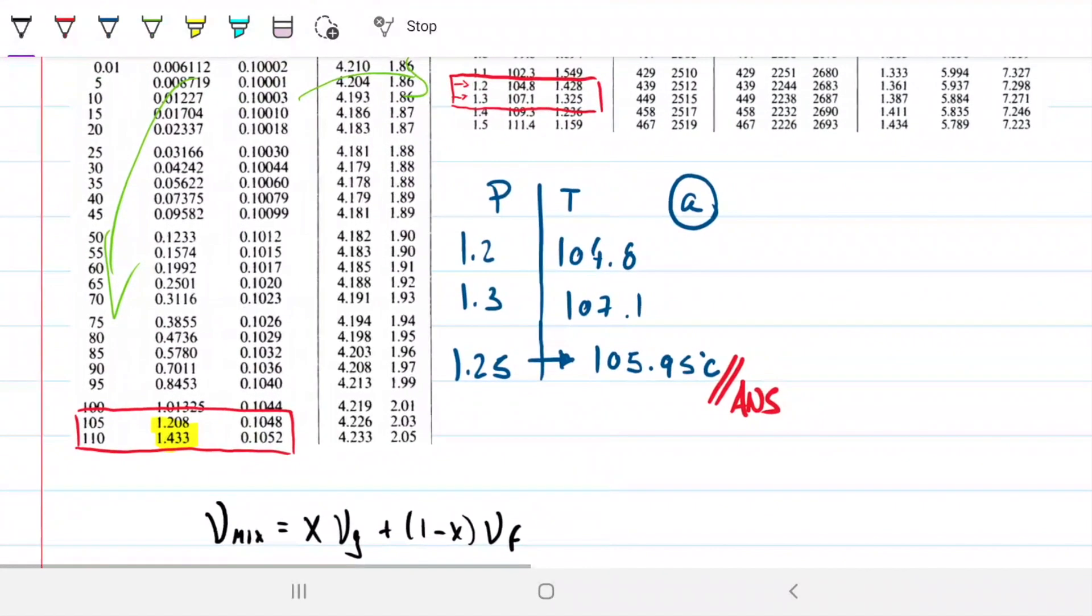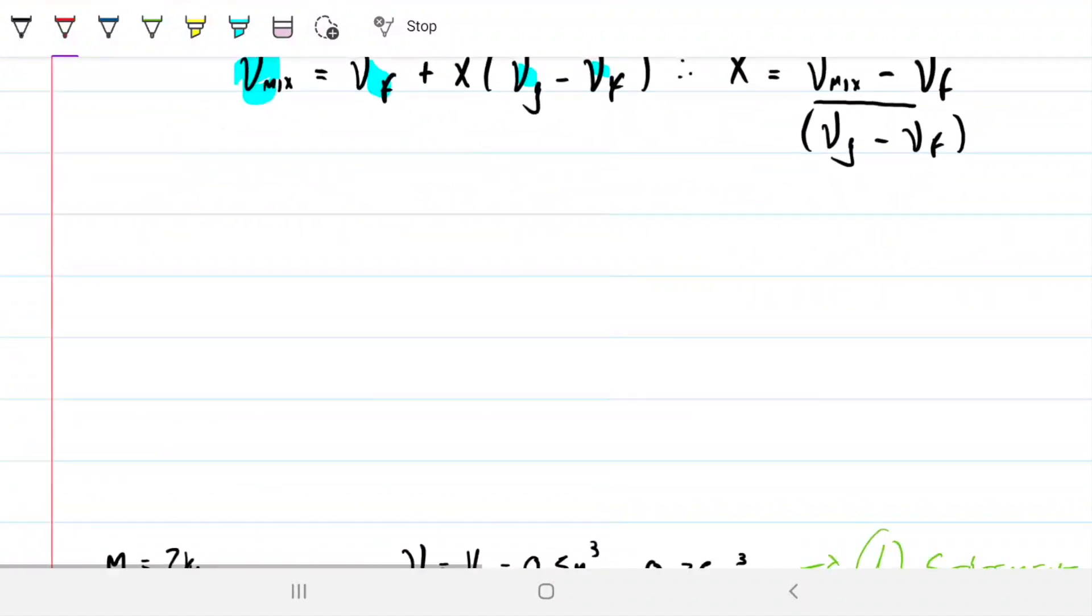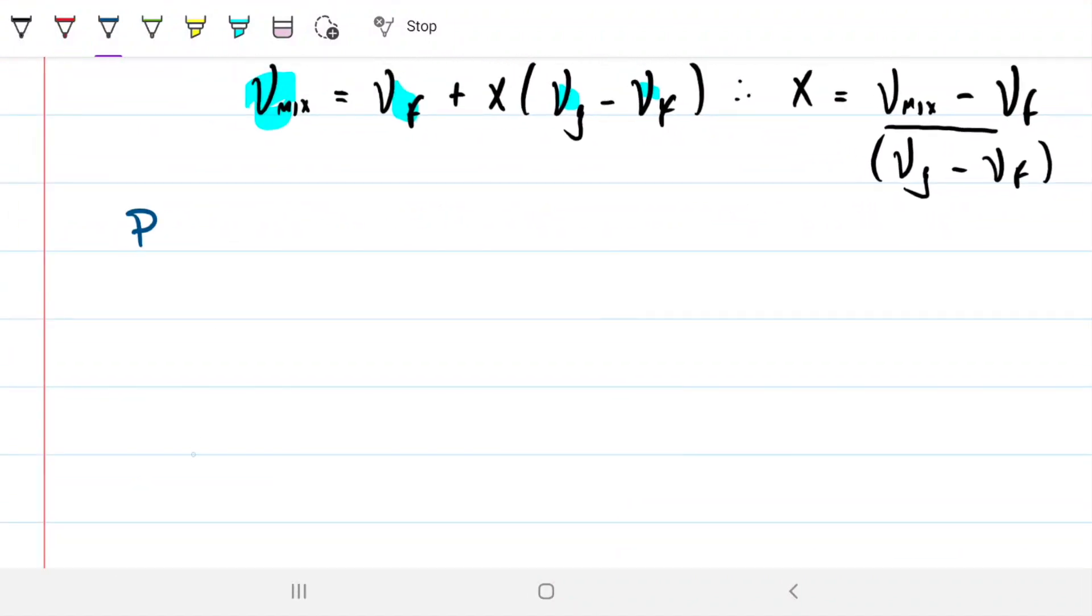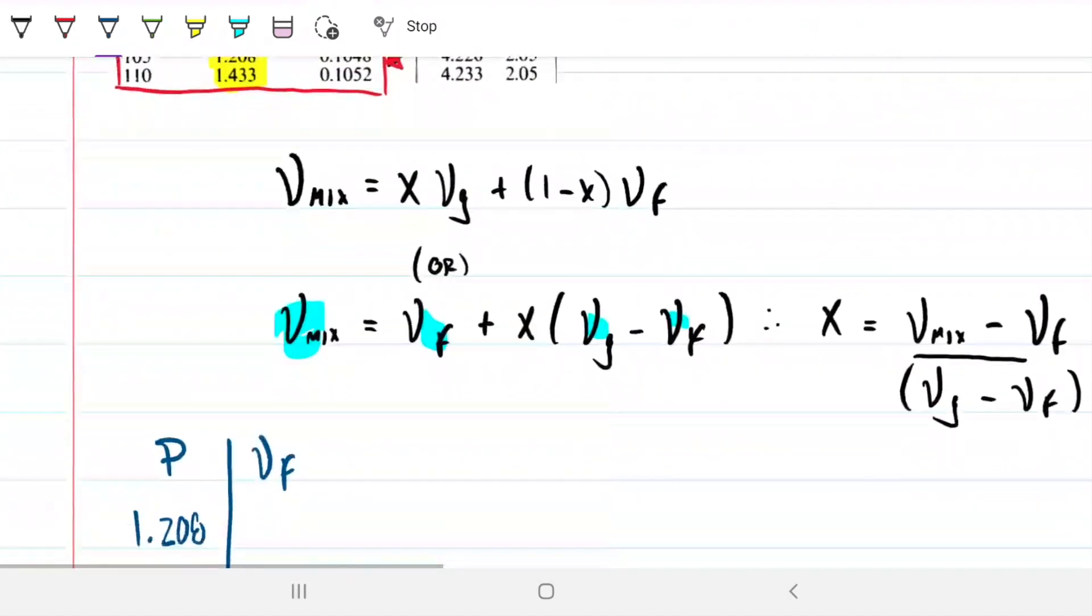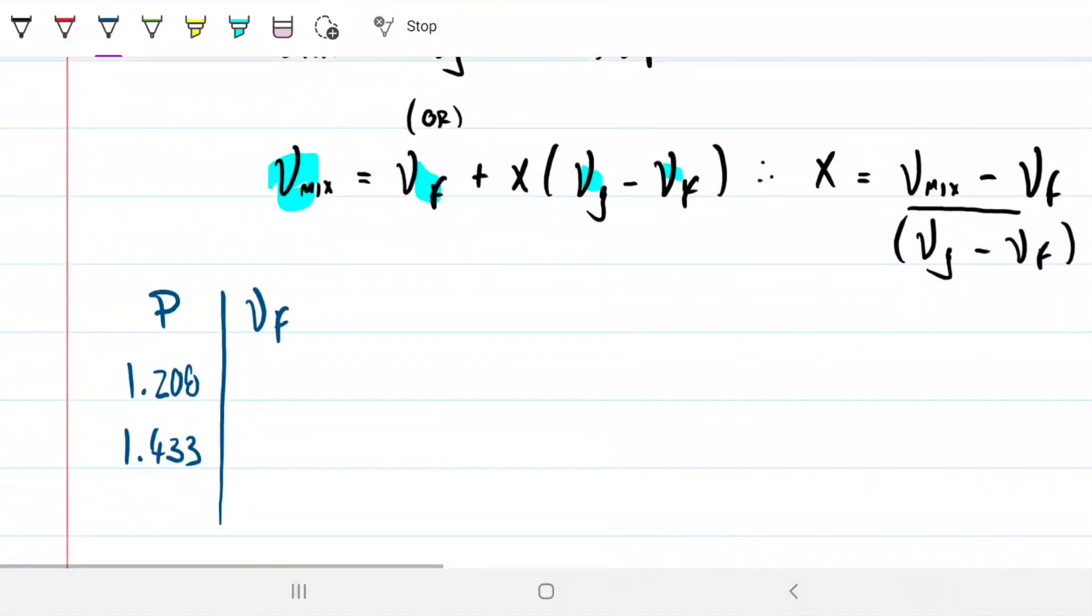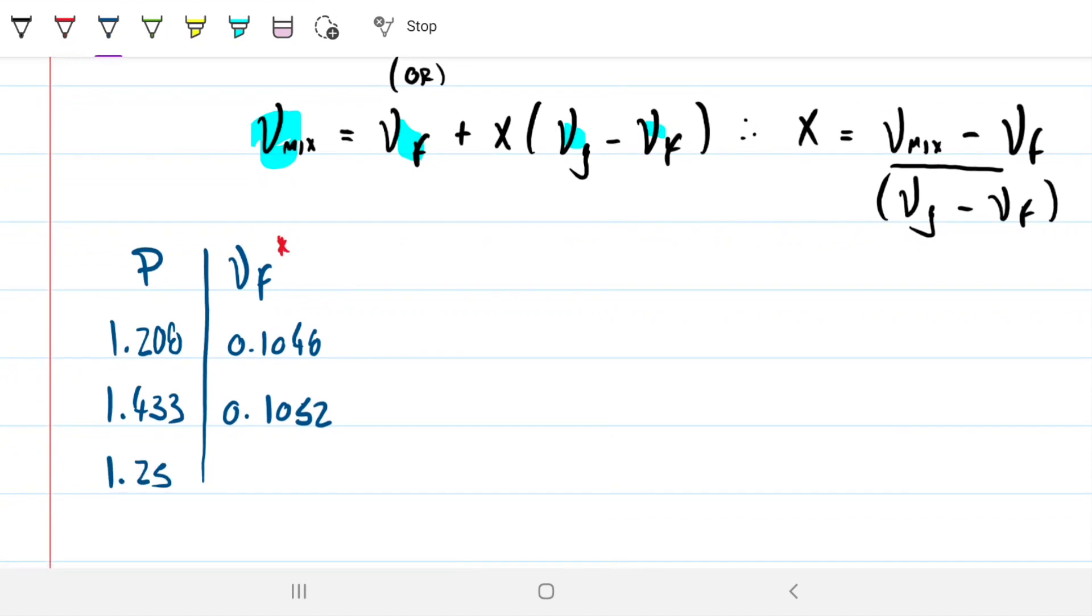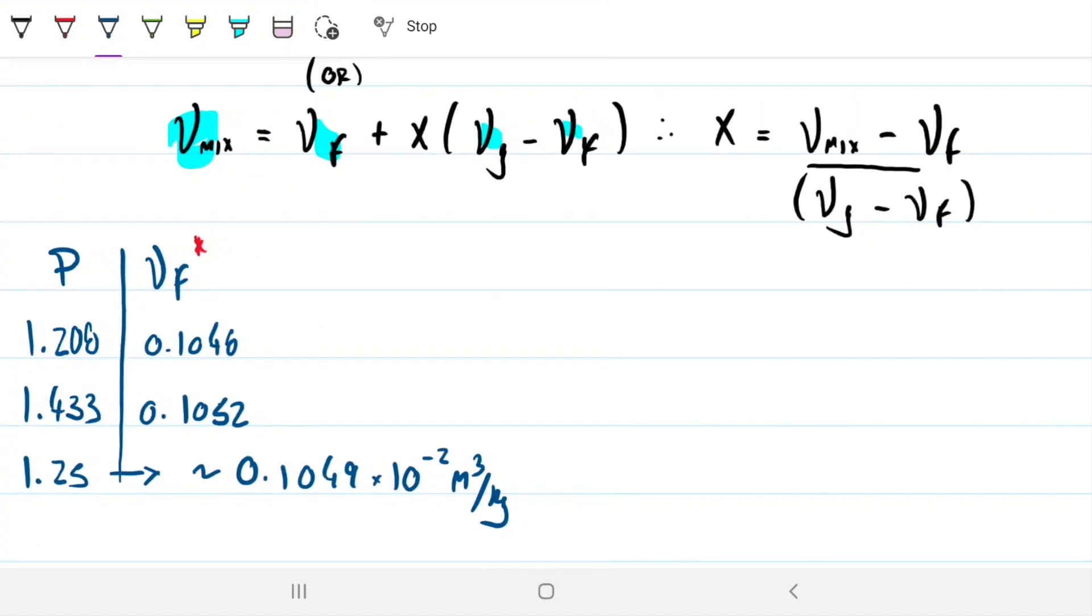Let's grab these values off the table. First one is, we want to know the liquid one, so this guy here. We want to know this value here, and we know it's between 0.001048 and 0.001052. So we can once again interpolate, so let's do it one more time. We need to interpolate, we'll do the pressure and the specific volume for the saturated liquid, or VF. And we have 1.208 and 1.433. And we have the values here, so let's just go ahead and put the values. 0.001048 and 0.001052. I'll go ahead and put a little star here so that I remember that's 10 to the minus 2. And this is, I have 1.25 bars, so I can interpolate this. That will give me approximately 0.001049 times 10 to the minus 2.